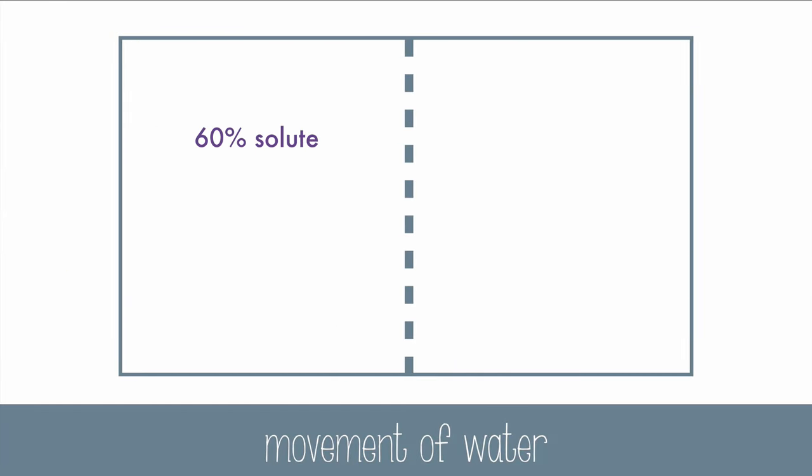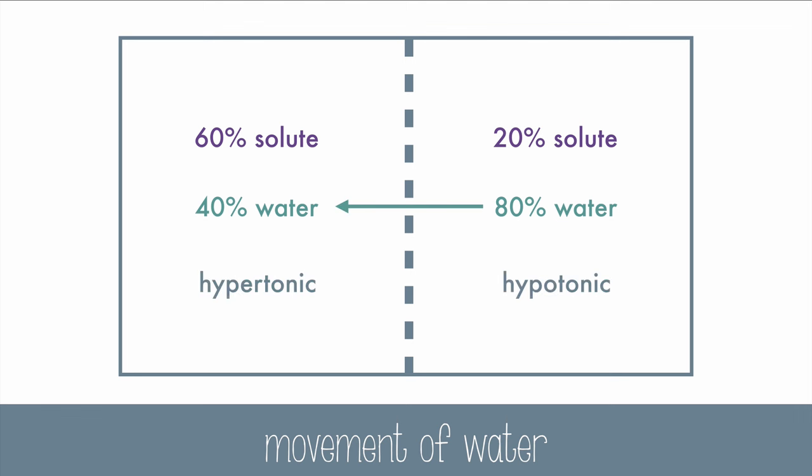Now we have a 60% solute and a 20% solute scenario. First, let's figure out how much water there is by subtracting the amount of solute from 100. We have 40% water and 80% water. Water always moves from a high to low concentration of water, so it will flow from the right to the left, and again, that's from hypotonic to hypertonic.